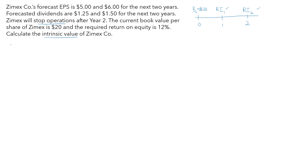To find the residual income for year one, we take EPS in year one minus the cost of equity times the beginning book value B0. So that is $5 minus 12% times $20, which equals $2.60. That is the residual income for the first year.